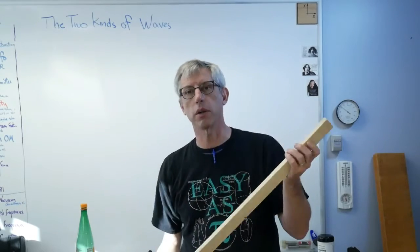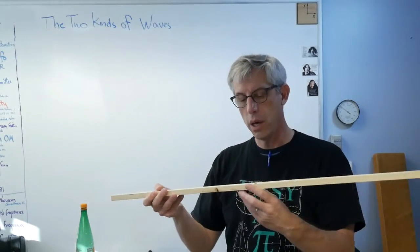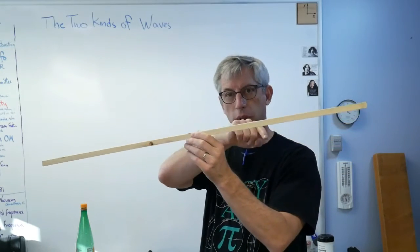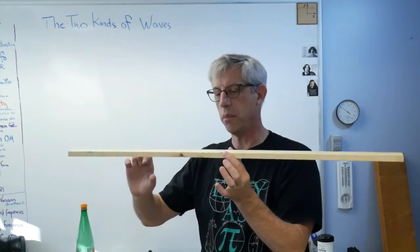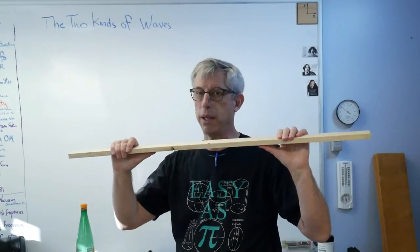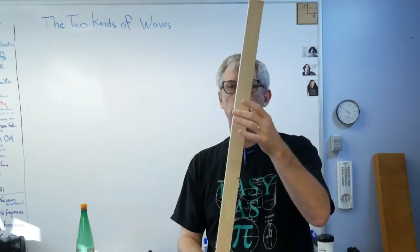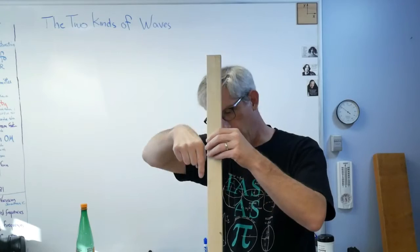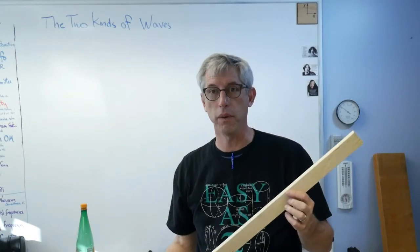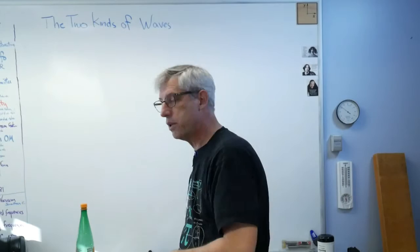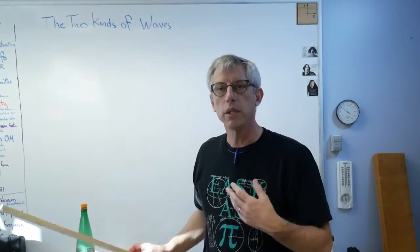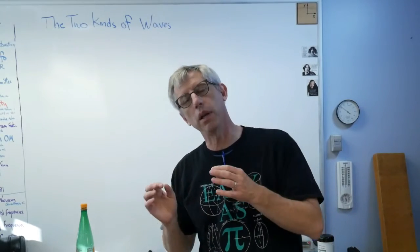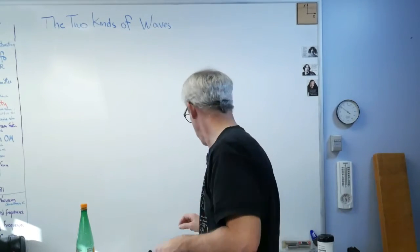I can also take this same structure and tap it on the end and send a wave down the structure. This is the distinction we want to make. When the wave makes the structure go back and forth like this, that's a bending wave. The beam here is actually bending, not much, just a little. If I hold it like this and tap it that way, the wave is going down the beam. That is a compressive wave. Sound is a compression wave.